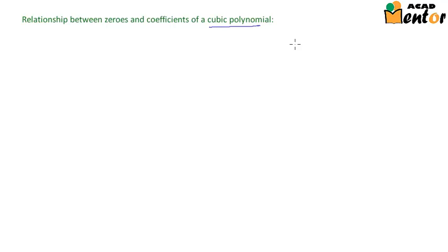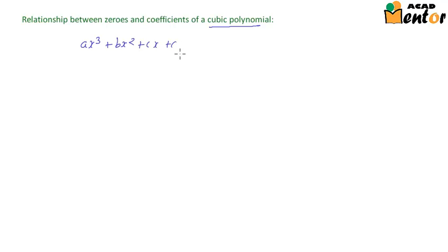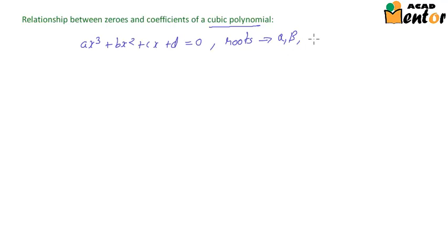Let's suppose there is a cubic polynomial of general form ax³ + bx² + cx + d = 0, and its roots are given as alpha, beta, and gamma.